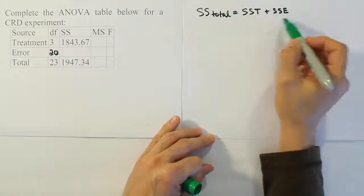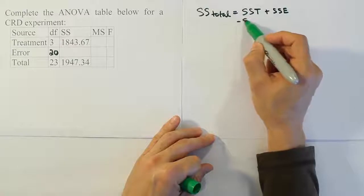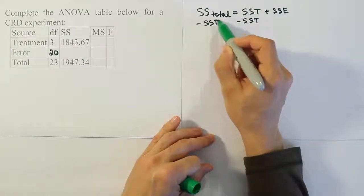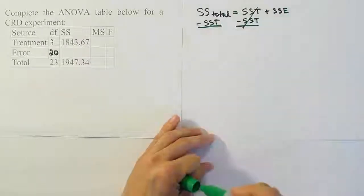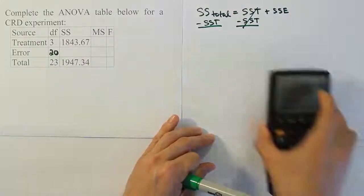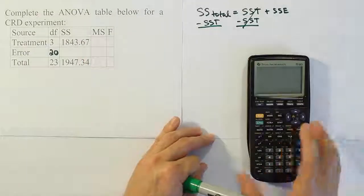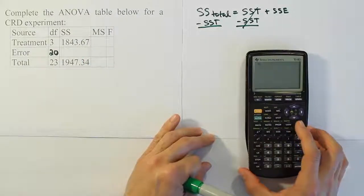So if we want to solve for the sum of square for error, we can just subtract from both sides SST. If we do that, we'll be left with the sum of square for error. So what we have to do is subtract from the total the sum of square for treatment. We have the total, we have the treatment, so let's subtract them to get the answer for SSE.